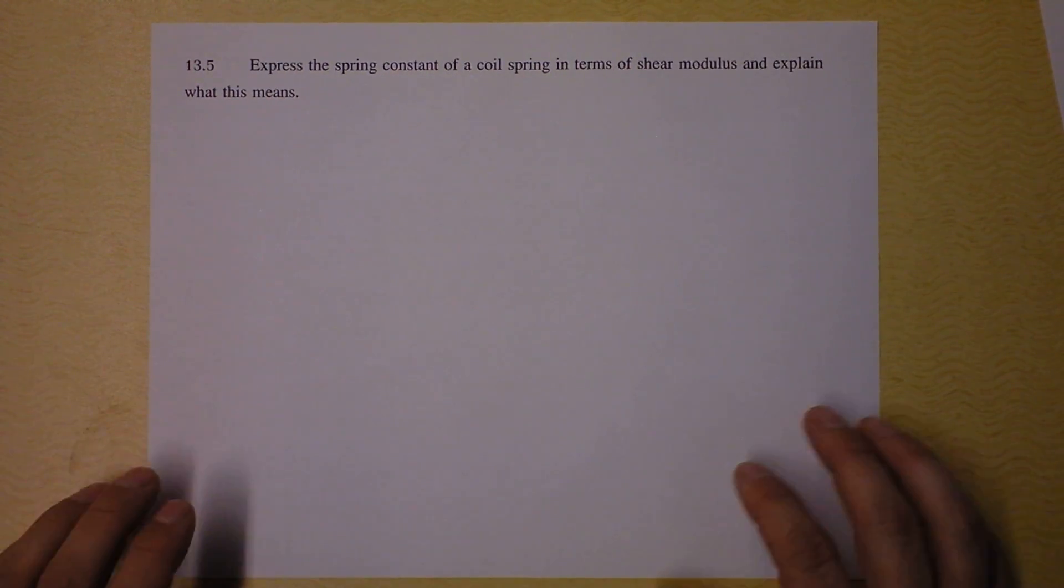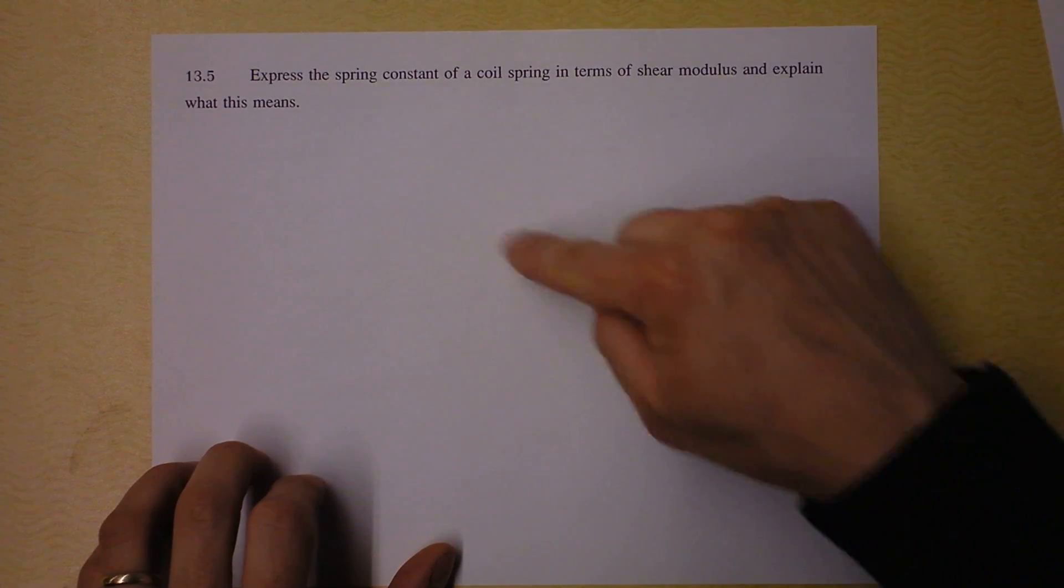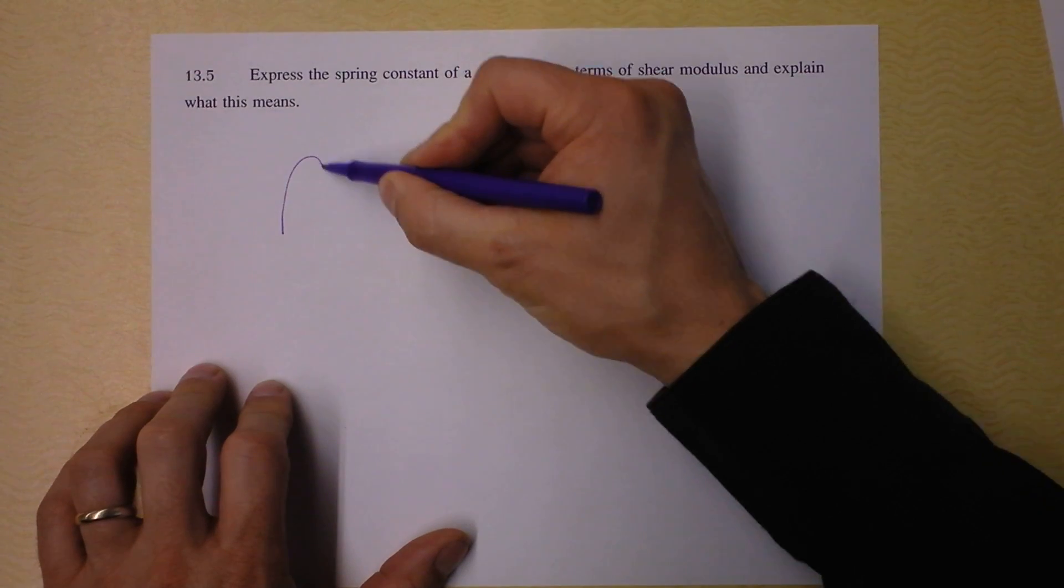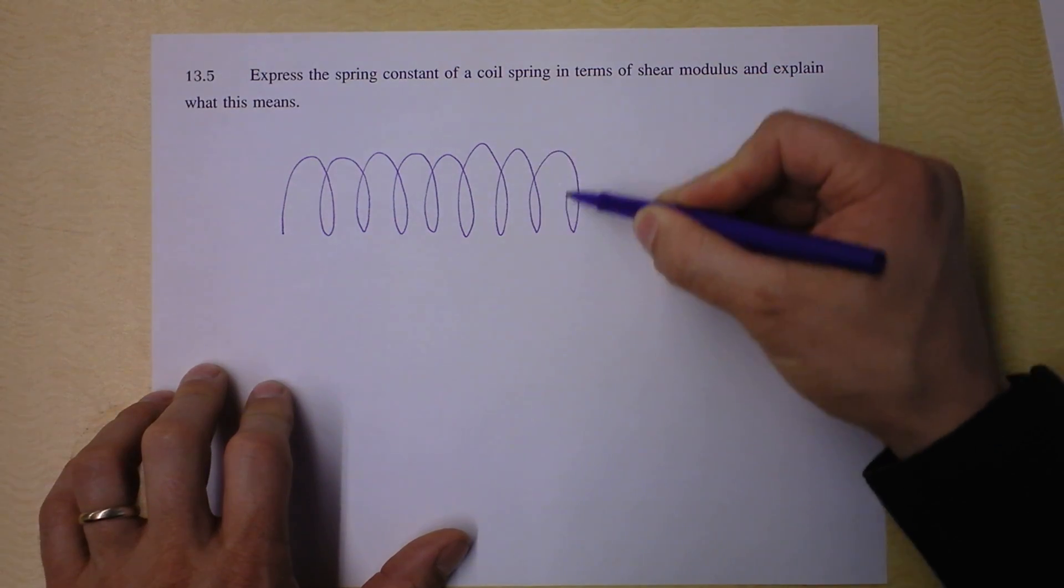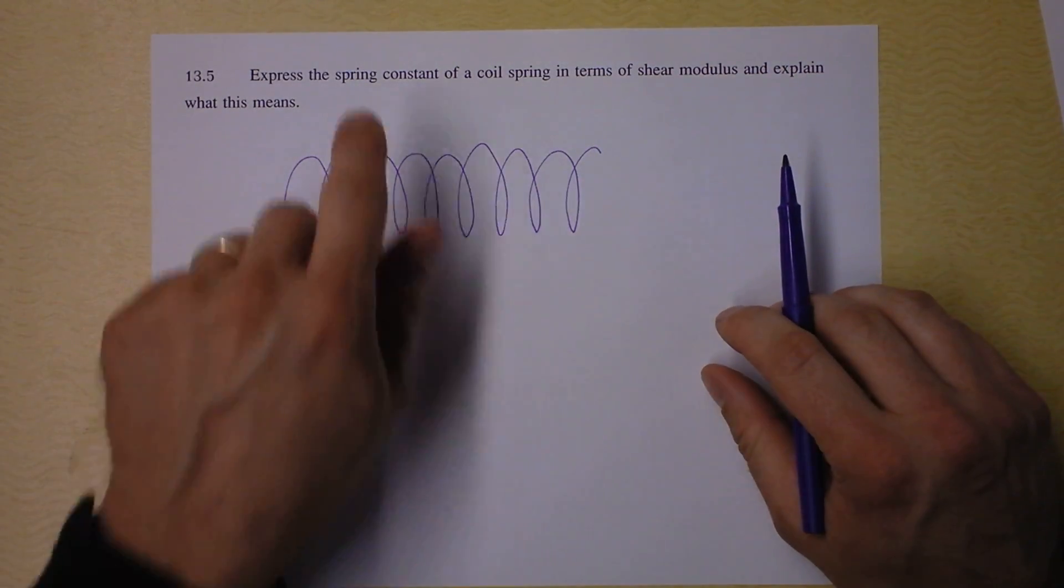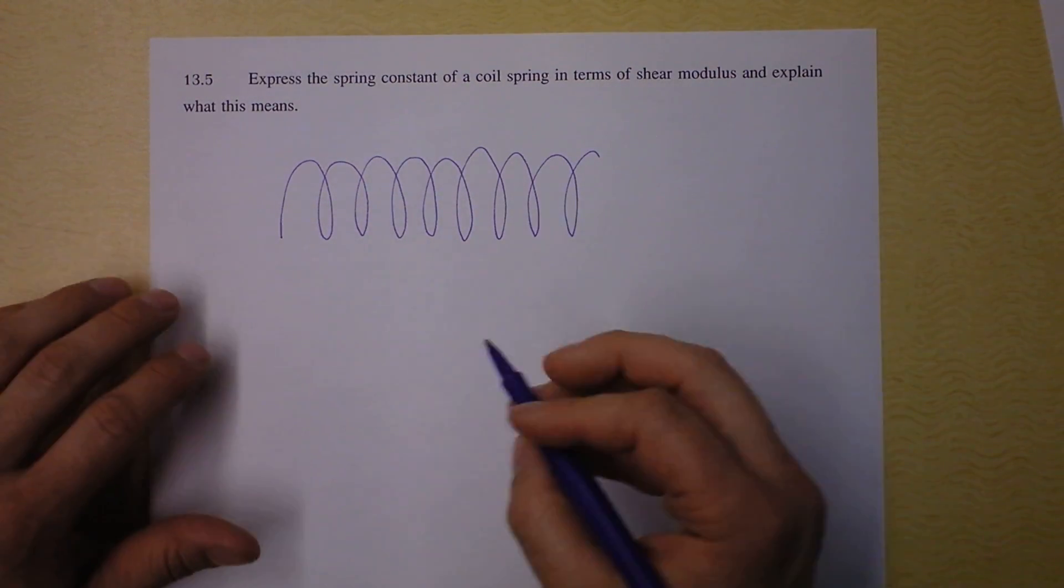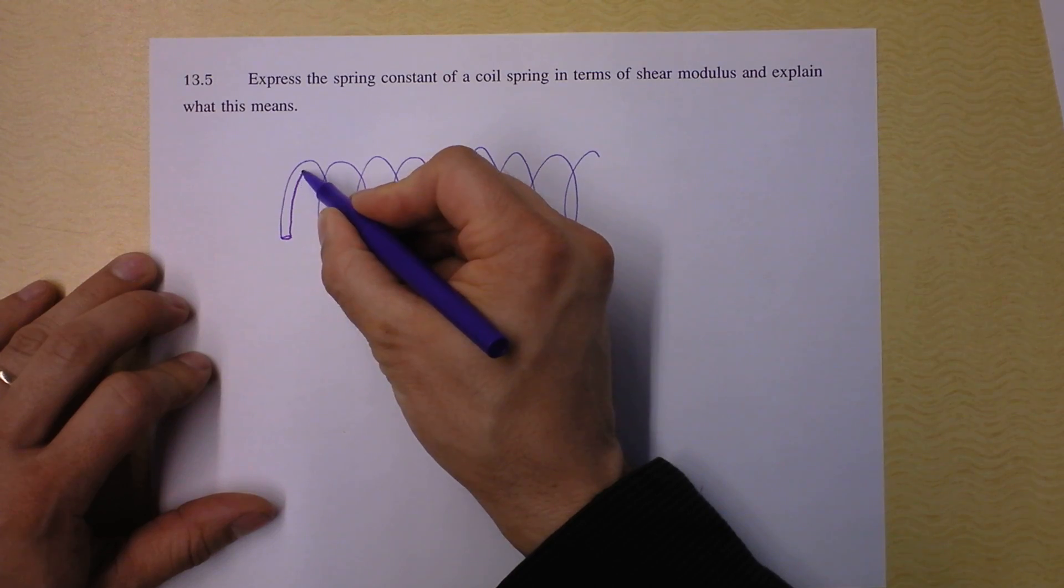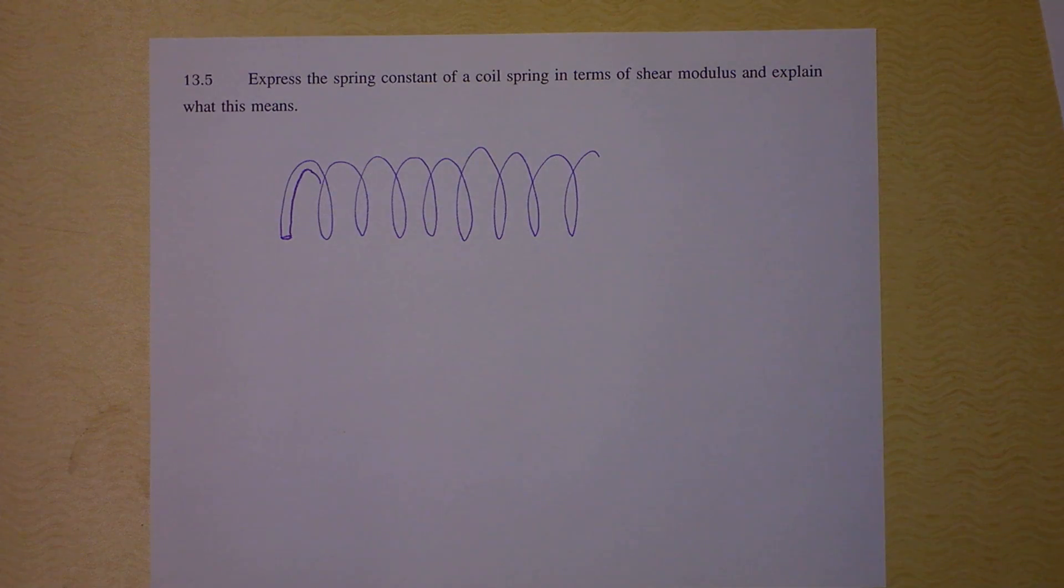The fifth question asks you to do some algebra. Can you connect the spring constant of a coil spring that is like this in terms of shear modulus and explain what it means? So here's a coil spring for you. I want you to make a connection between the spring constant of the spring, which is just K, and the shear modulus of the steel that's used to make up this spring. So there's probably going to be some cross-sectional area of the wire that's present right here, and we'll have to do a little bit of algebra to think about that. Or maybe even conceptual thought. Maybe.